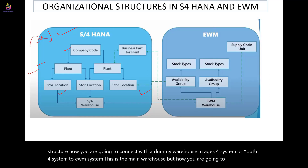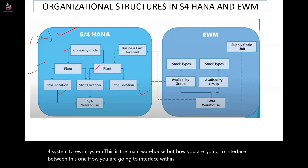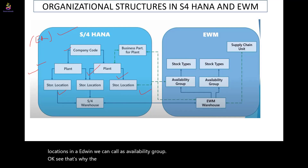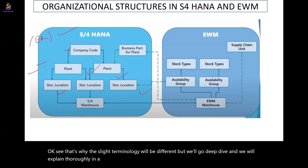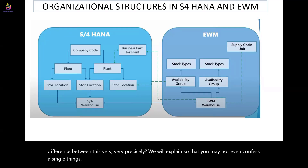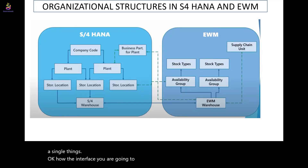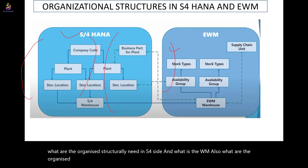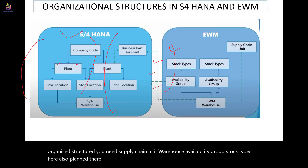How do we interface between these two systems? Storage locations in S4 — in EWM we call them the availability group. The terminology will be different, but we will go deep dive and explain thoroughly so you understand precisely what the difference is. By looking at the diagram, you can see what organizational structures you need in S4 and in EWM: supply chain, warehouse, availability group, stock types, and plant.